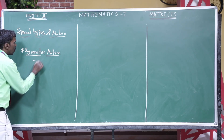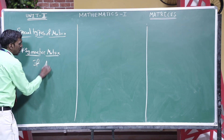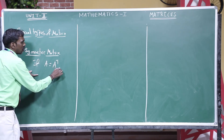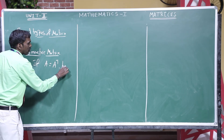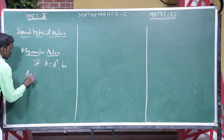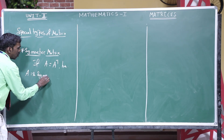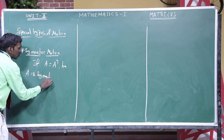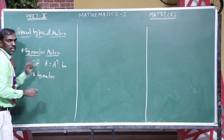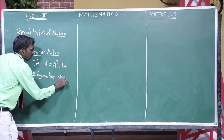For example, this is the given condition: if A equals A transpose, then A is a symmetric matrix. If I am transposing the element and you get the same A matrix again, this is called a symmetric matrix.